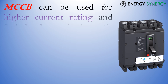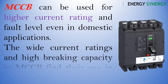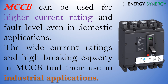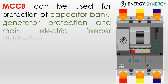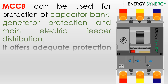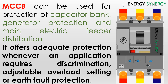MCCB can be used for higher current ratings and fault levels even in domestic applications. The wide current ratings and high breaking capacity in MCCB find their use in industrial applications. MCCB can be used for protection of capacitor banks, generator protection, and main electric feeder distribution. It offers adequate protection whenever an application requires discrimination, adjustable overload setting, or earth fault protection.